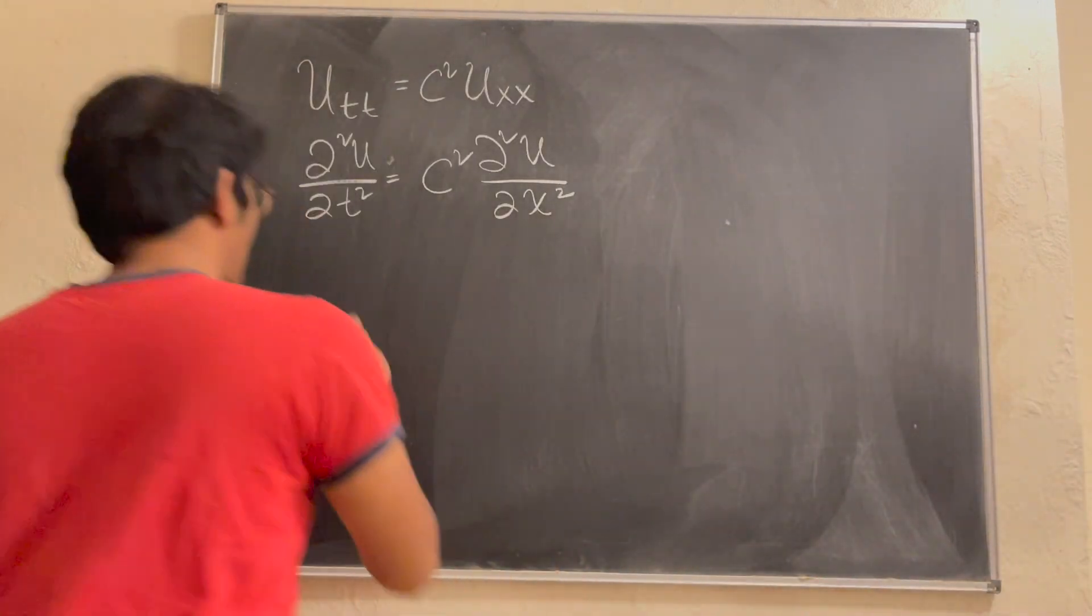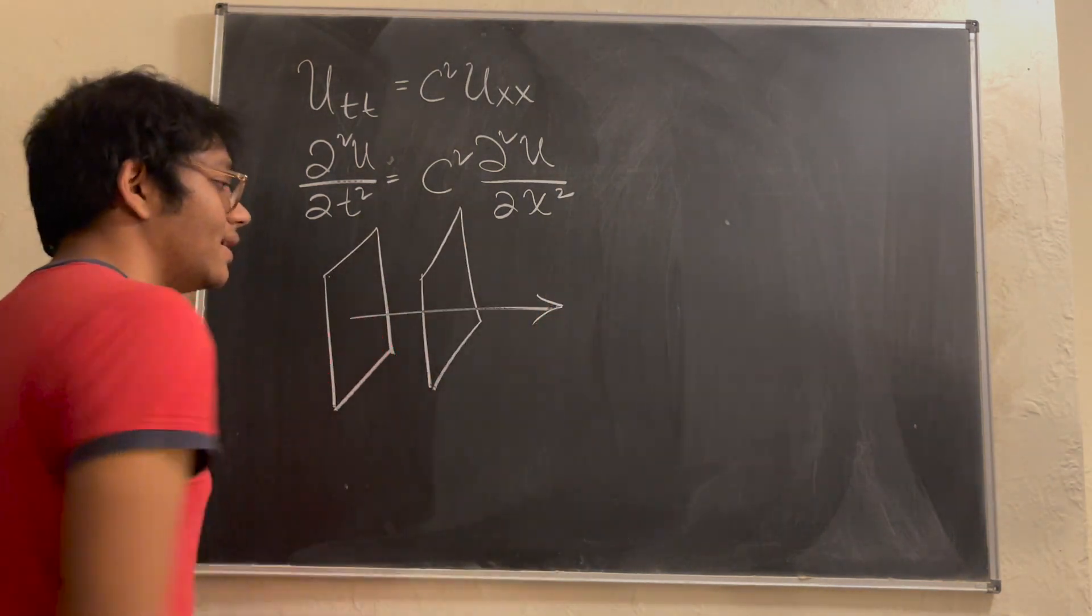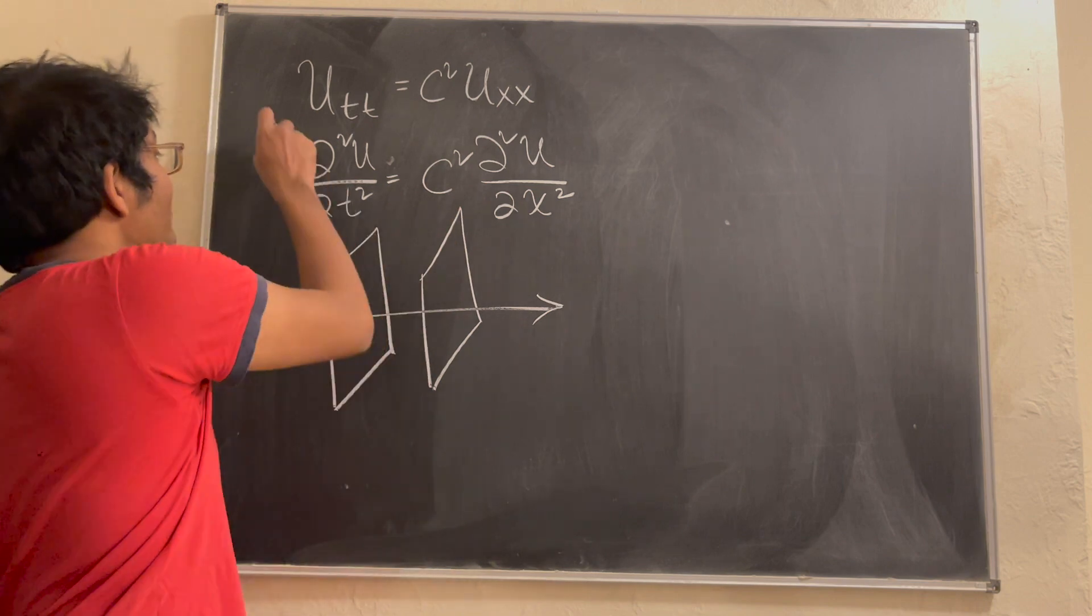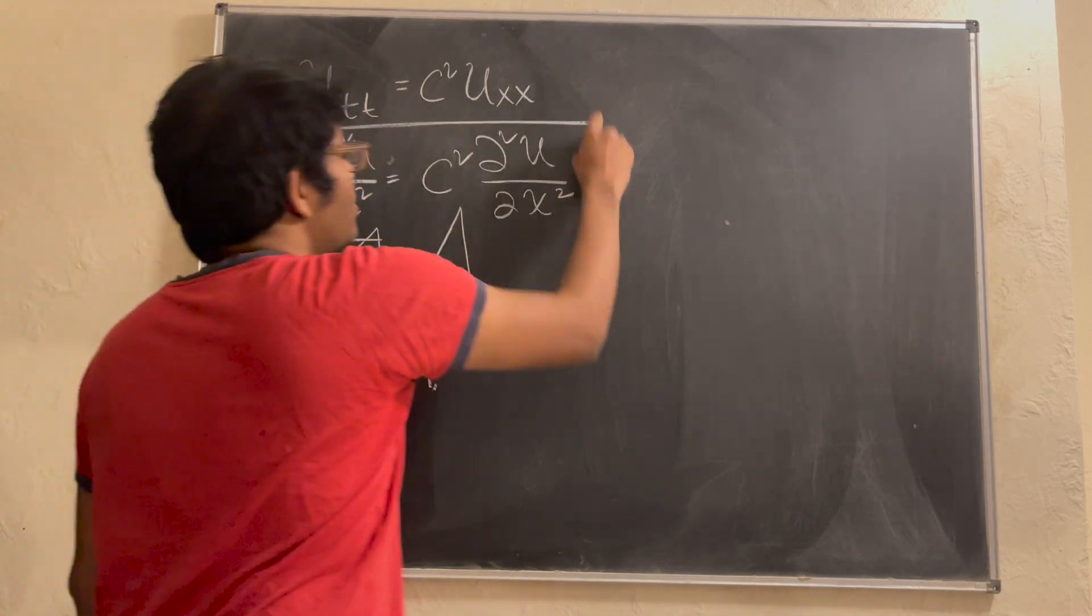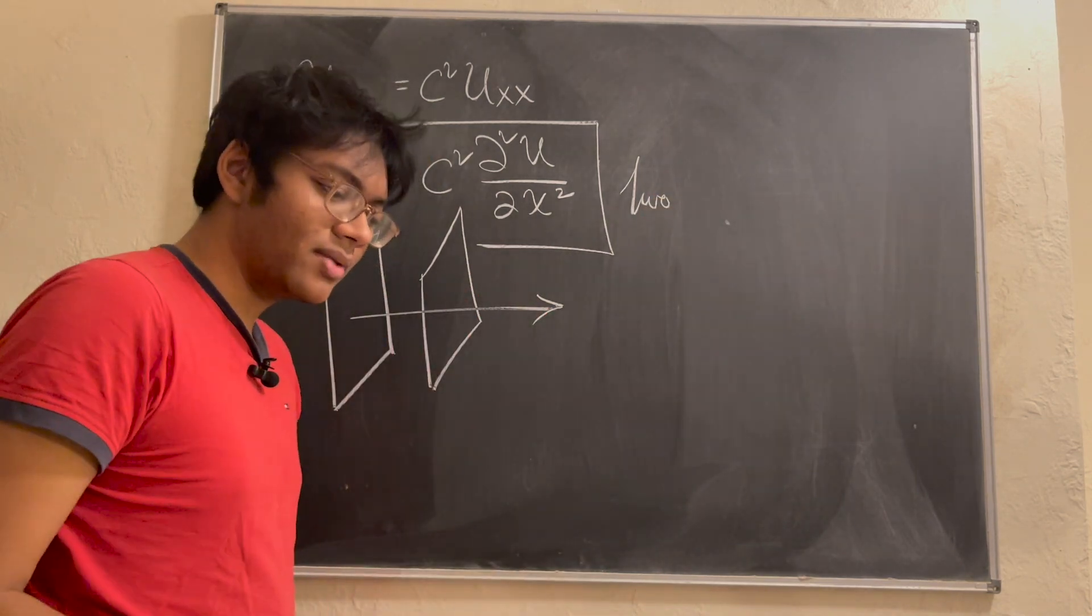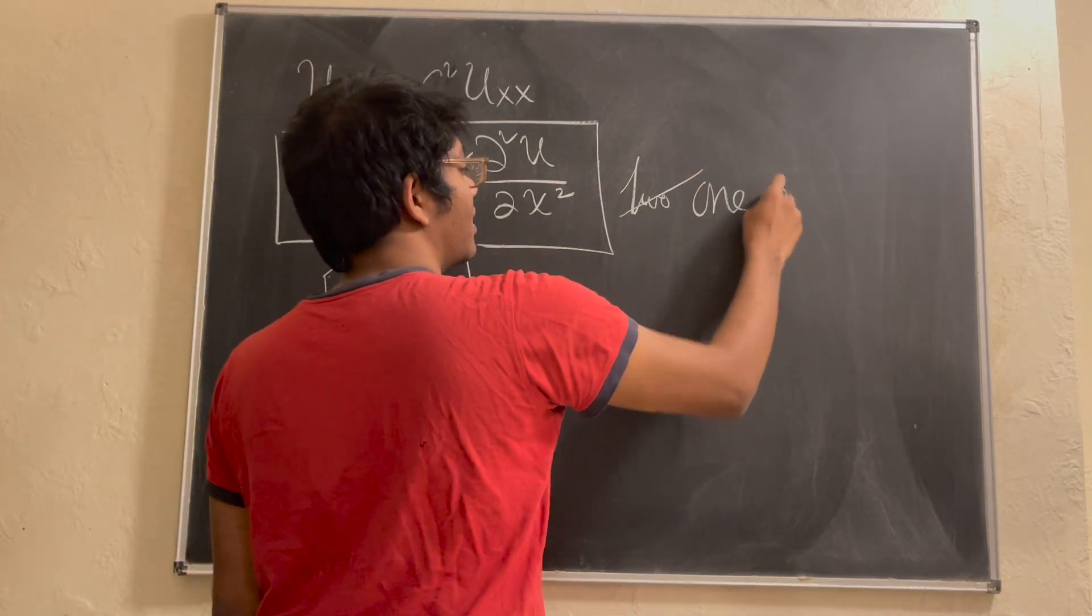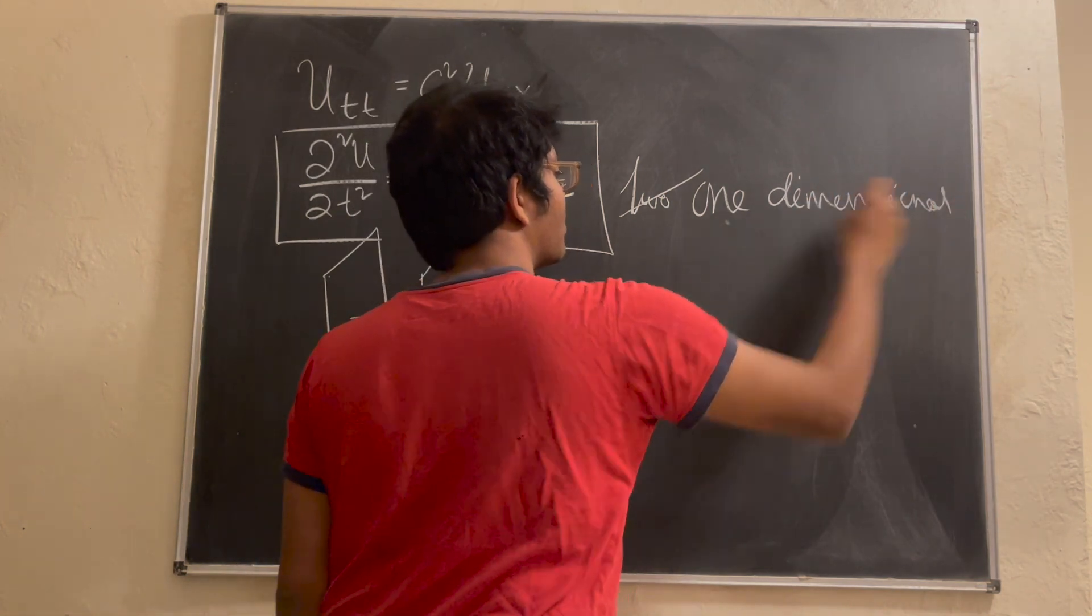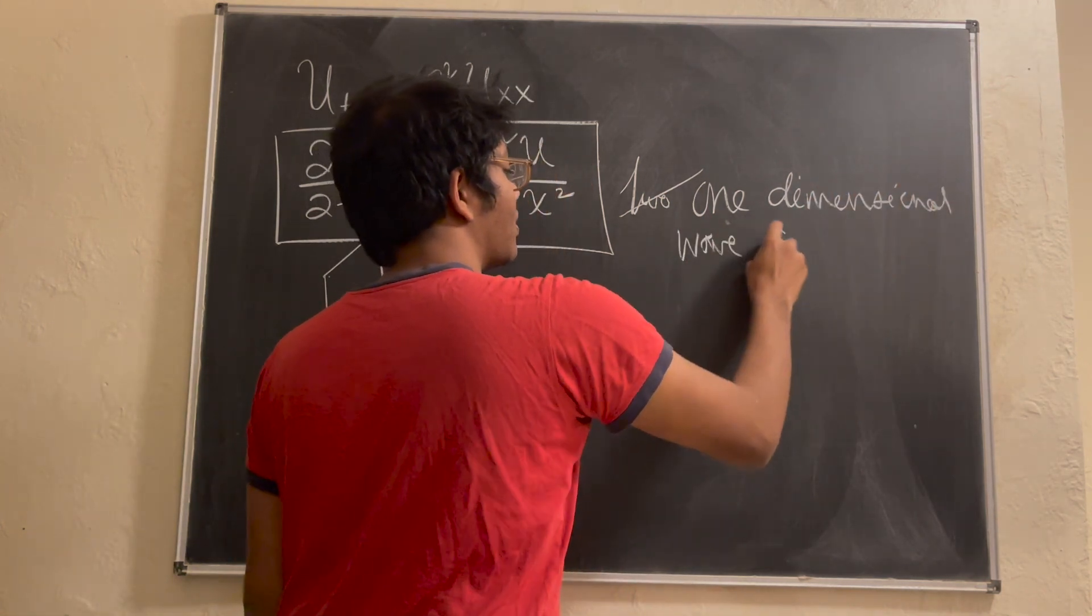So, for example, a wave that looks like this in time. And so, this is a very famous equation. It is the one-dimensional wave equation.